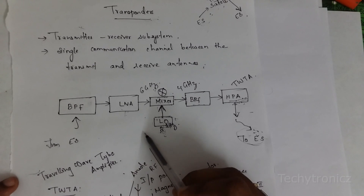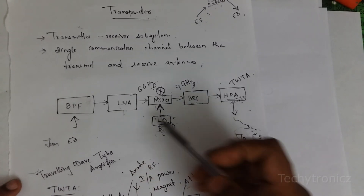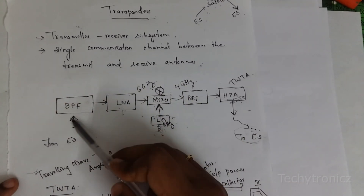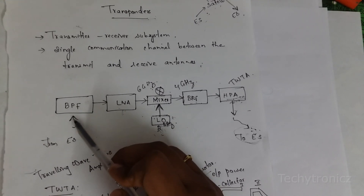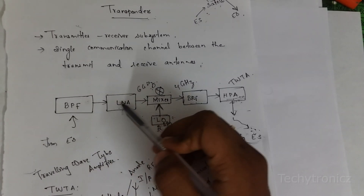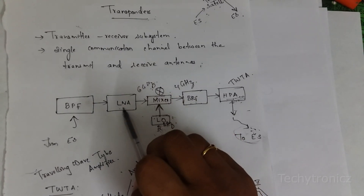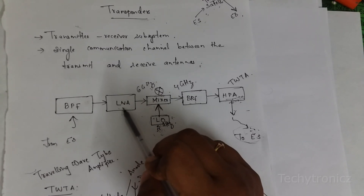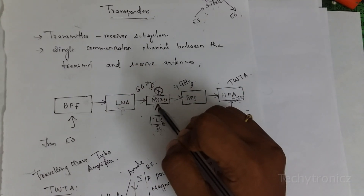This is the block diagram of a satellite transponder. From the earth station we are giving the signal — a baseband signal is given to the bandpass filter and then to the LNA, that is the low noise amplifier. This low noise amplifier adds some noise to the carrier signal and then gives it to the mixer.